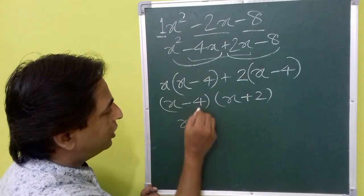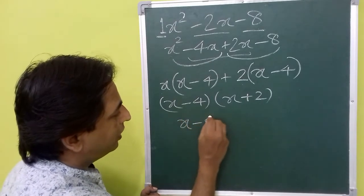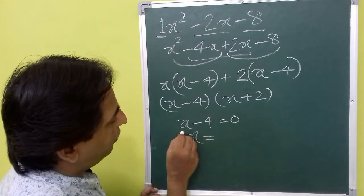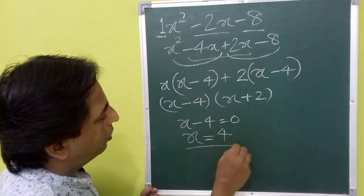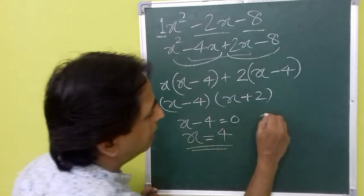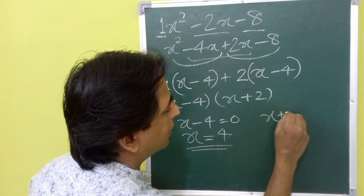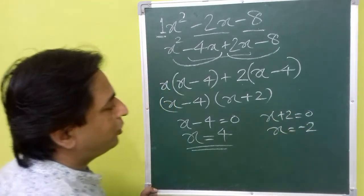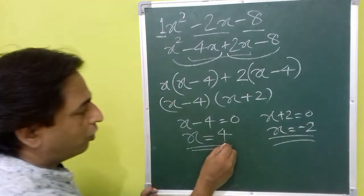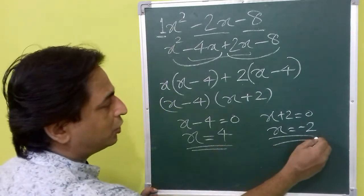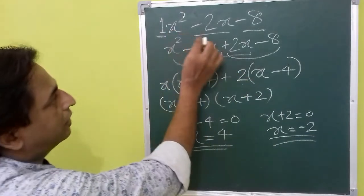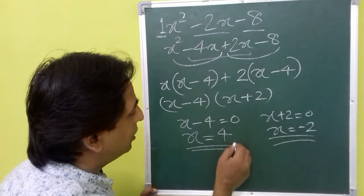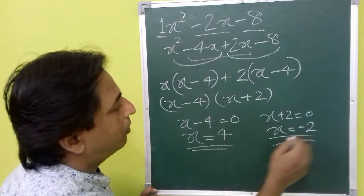This polynomial will become 0 when either factor equals 0. We equate each factor to 0 to find the value of x. So x equals 4 from the first factor, and from x plus 2 equals 0 we get x equals minus 2. That means 4 and minus 2 are the zeros of the polynomial.